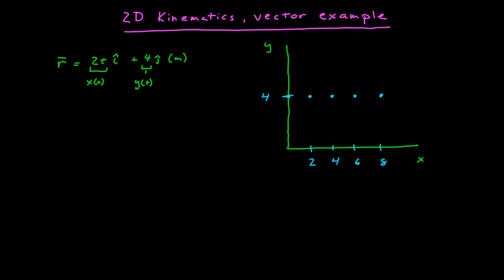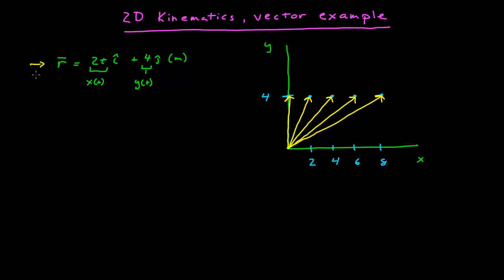Now I can represent each of these positions. My position vector on this graph looks like this. As the particle is moving to the right with this simple trajectory, this is what the vectors look like at these points in time. We can get an idea of the motion — as time goes by, the vector stretches out as it points more and more to the right.